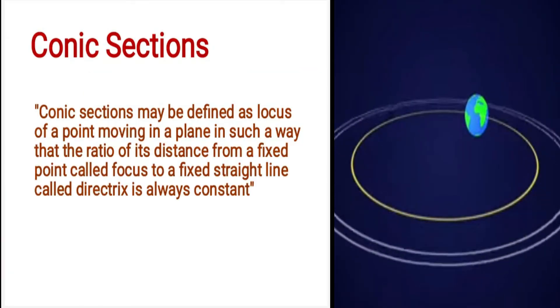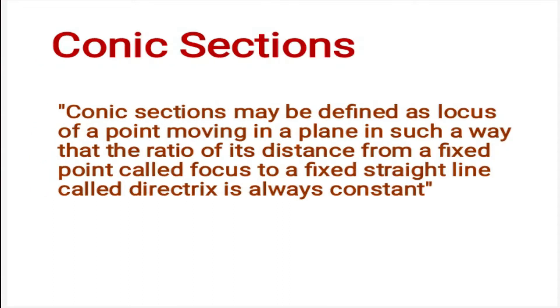Conic sections may be defined as locus of a point moving in a plane in such a way that the ratio of its distance from a fixed point called focus to a fixed straight line called directrix is always constant.